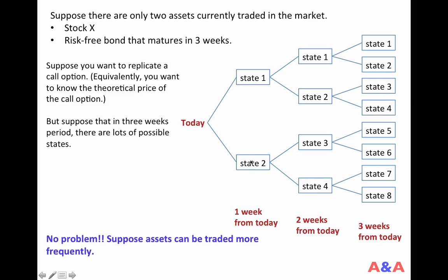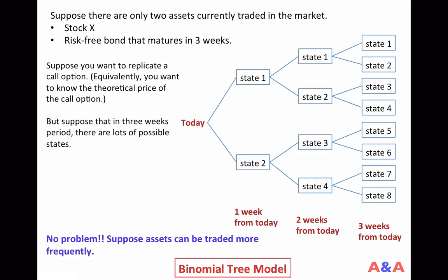Note that it is still the case that there are eight possible states in the three-week period. But now, assets can be traded so frequently that in each period there are only two possible states for the stock price — going up or going down. The basic idea is that assuming only two possible states is not too rough an approximation if it is a very near future, like one week, one day, or even one hour. Such a model is called the binomial tree model.